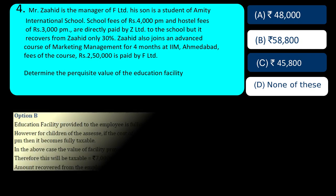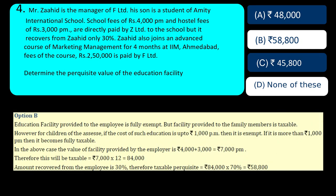But if the perquisite is provided to family members, it is taxable. For children, there is a special provision — if the cost is not more than Rs. 1,000 per month, it can be exempt even for a child. But if the cost exceeds Rs. 1,000, it becomes fully taxable. Here the education facility for the son is Rs. 3,000 plus Rs. 4,000 = Rs. 7,000 per month — more than Rs. 1,000, so it is fully taxable. Rs. 7,000 into 12 = Rs. 84,000. Since 30% is recovered, only 70% is taxable, coming to Rs. 58,800. Therefore, the answer is option B.